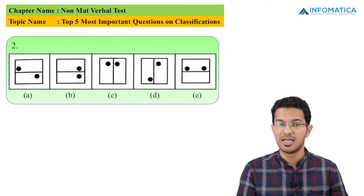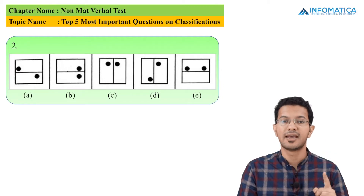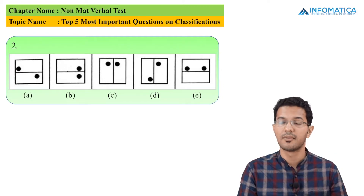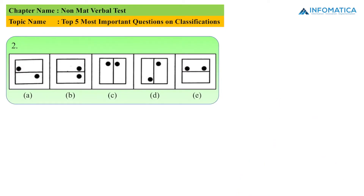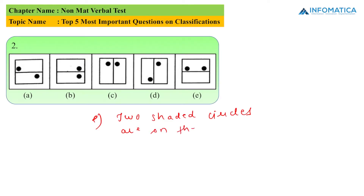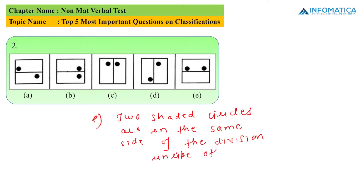But if I talk about option E, those shaded circles are on the same side. So the answer to this question will be option E. The reason is that the two shaded circles are on the same side of the division, unlike other figures.